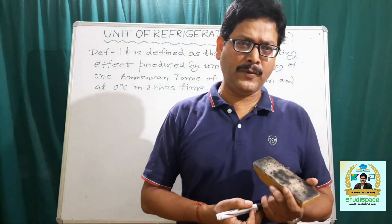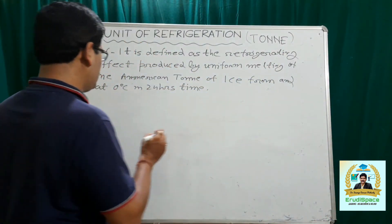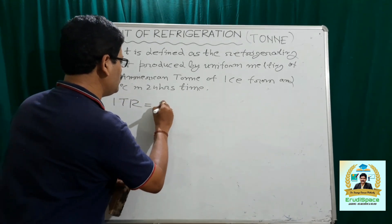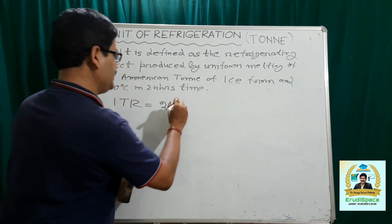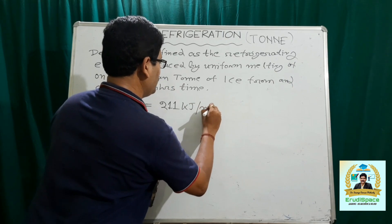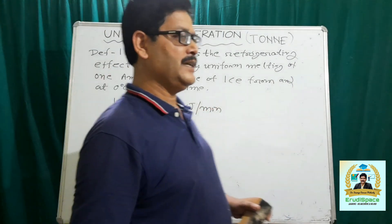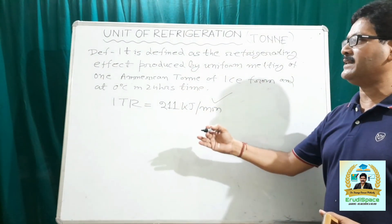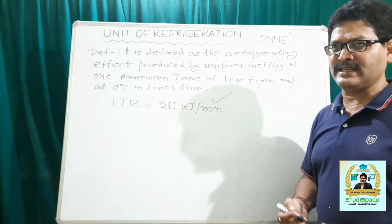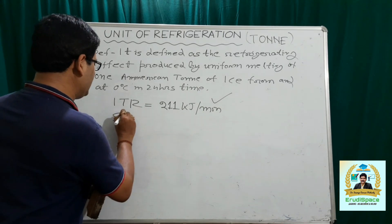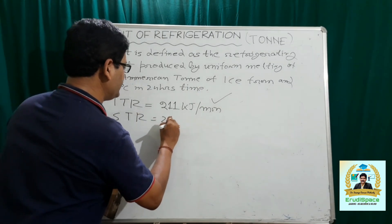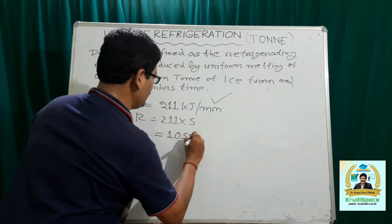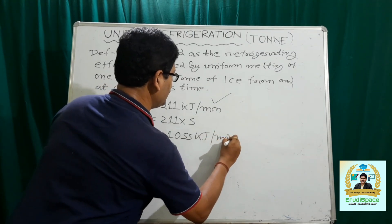So what is one ton of refrigeration? Mathematically, one ton of refrigeration, represented as 1 TR, is equivalent to 211 kJ per minute. That means if heat is removed at a rate of 211 kJ per minute, we can say its refrigerating capacity is 1 TR. Suppose it is 5 TR — that means it is removing 211 multiplied by 5, that is 1055 kJ of heat per minute.